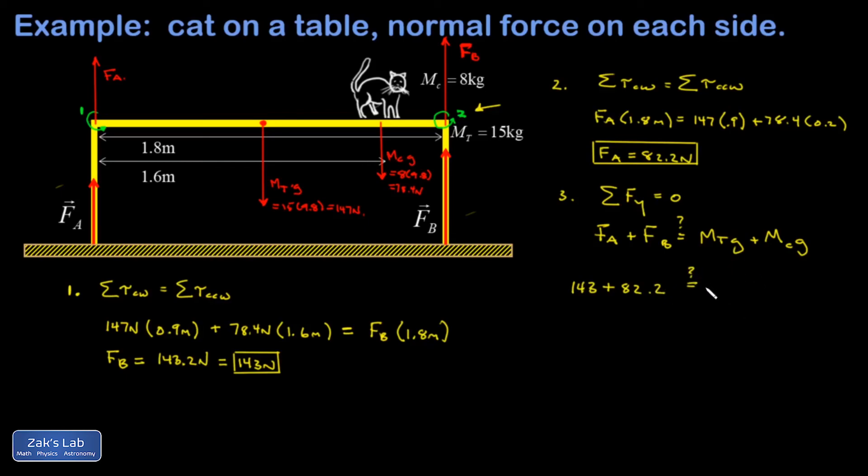I want to know, is that equal to the force of gravity on the table, 147, plus the force of gravity on the cat, 78.4? And when I add these up, I get 225.2 Newtons on the left side and 225.4 on the right-hand side, a very small difference that you can attribute to just rounding error along the way. So it looks good. I'm confident we have the right answer for our forces.